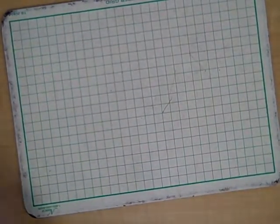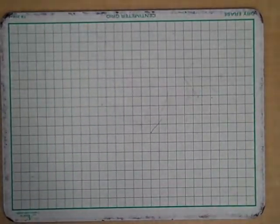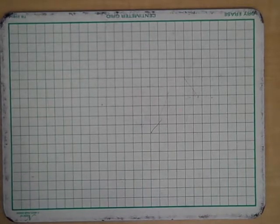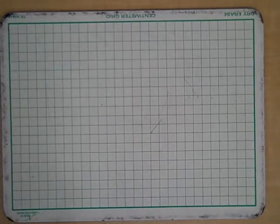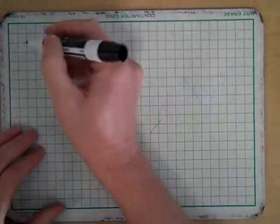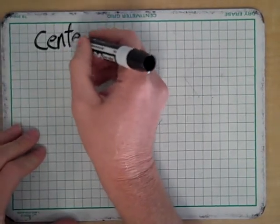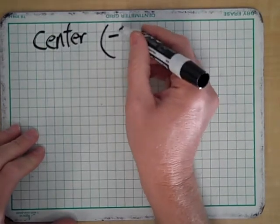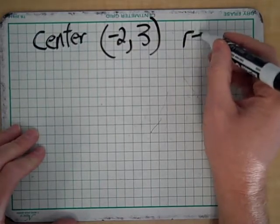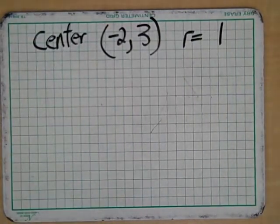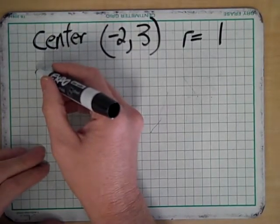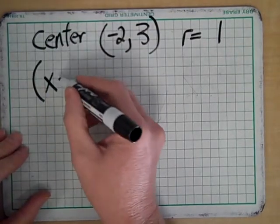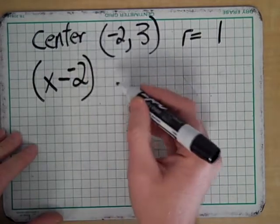Now, what I would like to do is maybe just get an example in. Let me start with an example. If I know that the center of a circle is at negative two, three, and the radius of that circle is one, what is that equation? Well, let's go back to our general form. We're going to take x. We're going to subtract the x coordinate, negative two. We're going to square that.